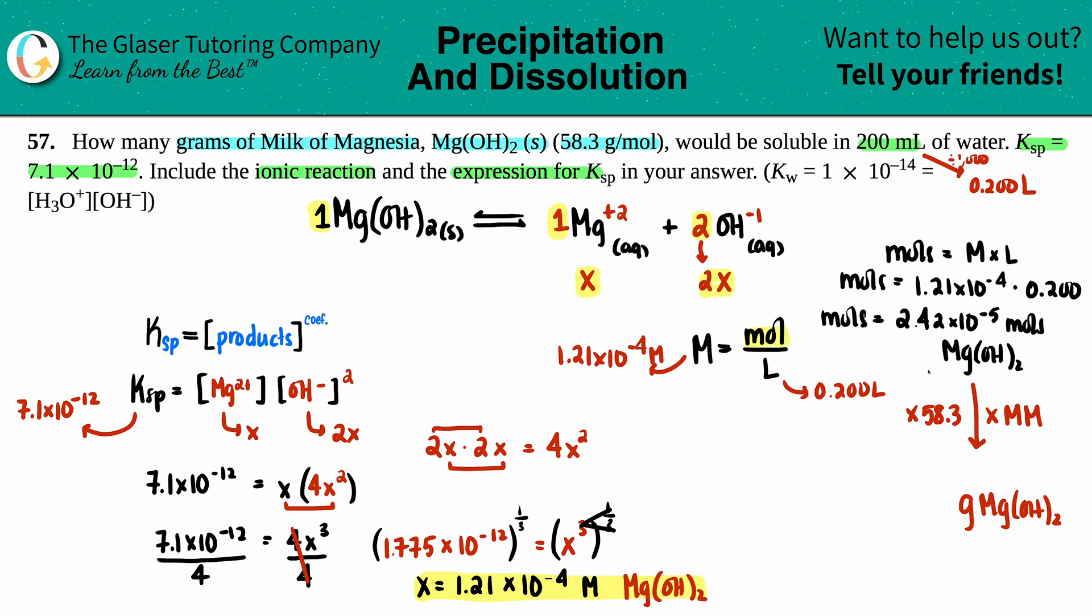We're going to multiply by 58.3. I'm not going to put the unit because molar mass is always grams per mole. That number times 58.3, and I'll do two sig figs. 1.4 times 10 to the negative third, and that's grams. That is your final answer.